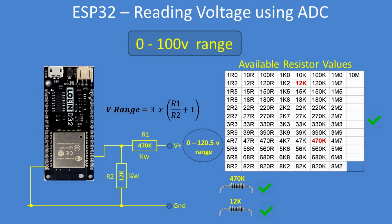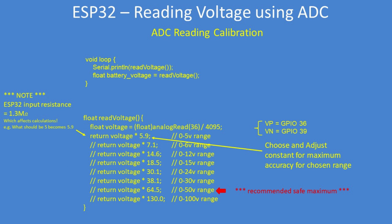As you go up in voltage, preferred value resistor tolerances start to become significant. Because the input impedance of the ESP32 affects the voltage divider, you need to adjust the voltage value by a factor. I've listed all the correction constants required for each of the voltage ranges, and I'll explain why that happens later.